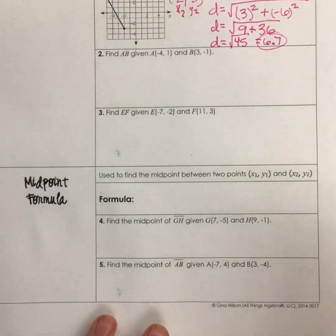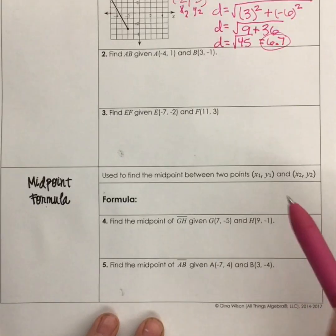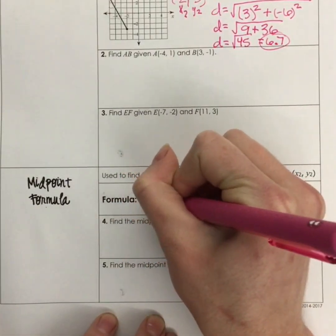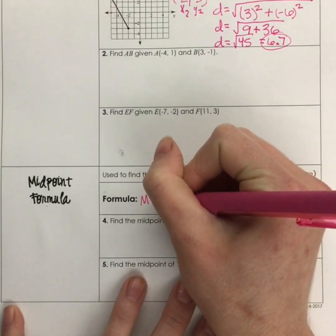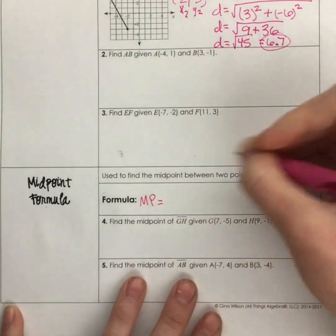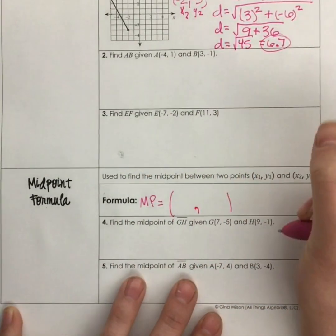All right, so moving on to our midpoint. Midpoint, we're still going to use that x₁, y₁, x₂, y₂ format, and our midpoint, remember m is our slope, so we want to make sure that we're specific. I like to use MP for midpoint, and this is a point, so we're going to get an x coordinate and a y coordinate.